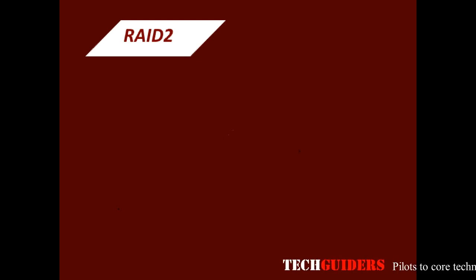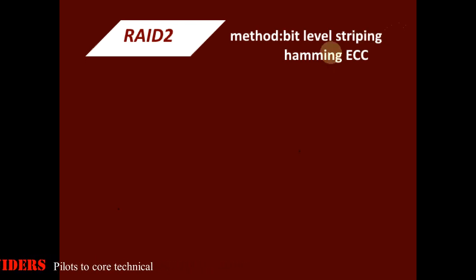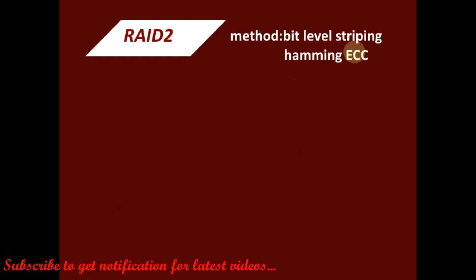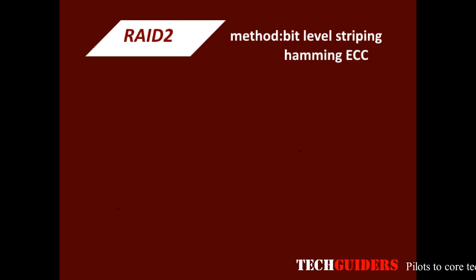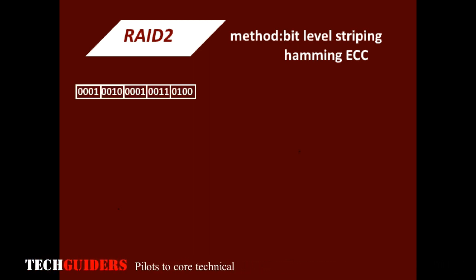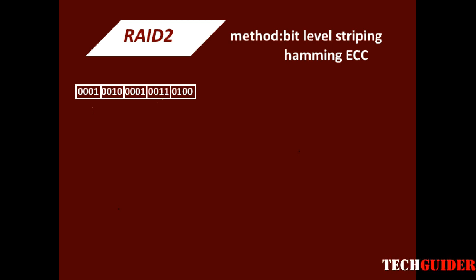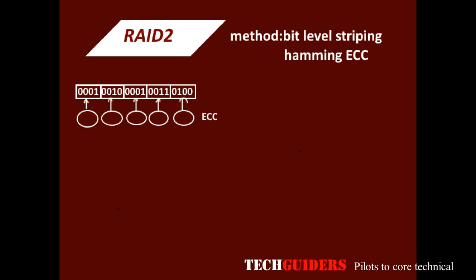RAID 2 uses the method of bit-level striping with Hamming error correcting code. Please refer to the video on Hamming code to follow this in a better way. The data to be written onto the disk is considered as a set of data words, each data word with a particular number of bits, and for each data word we generate an error correcting code.